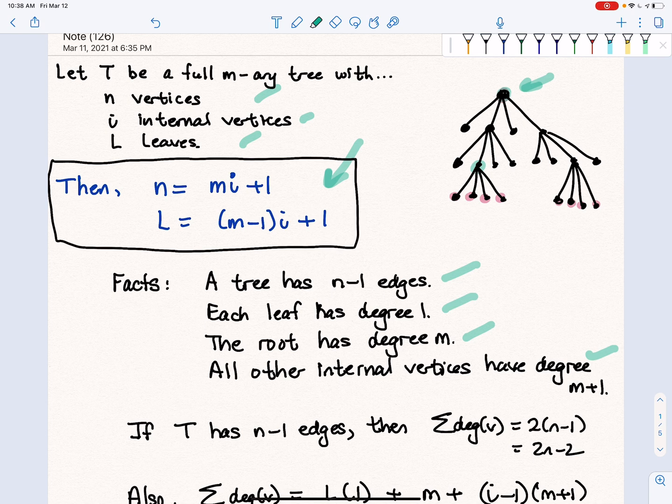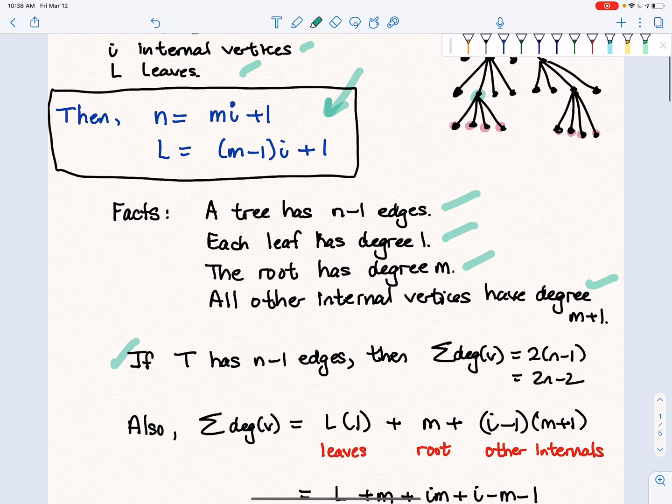The theory behind getting this relationship is looking at the total of the degrees. We know that if T has N minus 1 edges, then the sum of the degrees is twice the number of edges, which is 2N minus 2.